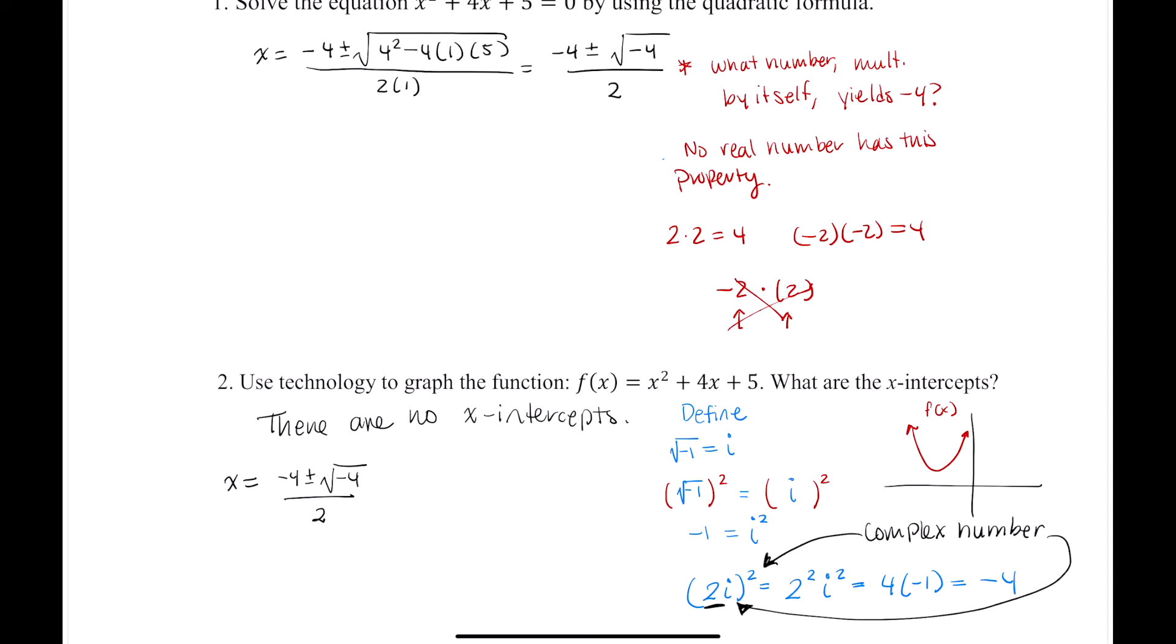2i. Complex numbers, in general, are of this form, a plus bi. a is the real part of the complex number. b is the imaginary part of the complex number.